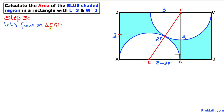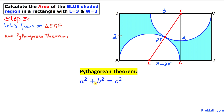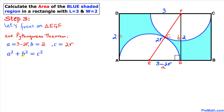Now let's focus on right triangle EGF. We will apply the Pythagorean theorem: a² + b² = c². In triangle EGF, the hypotenuse is EF, so c = 2r; the horizontal leg a = 3 - 2r; and the vertical leg b = 2. Substituting: (3 - 2r)² + 2² = (2r)².